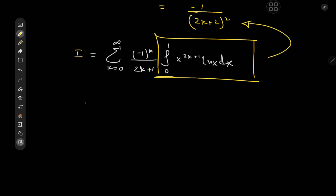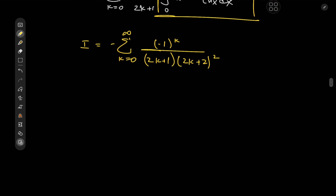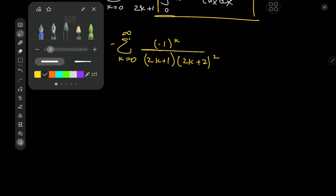With this result we write I as negative of the sum over k from 0 to infinity of (−1)^k over (2k+1) times (2k+2)². We've converted our integral into an infinite series problem. I could absorb the negative outside into the (−1)^k, but I'm not going to do that because I'll need to reverse it later.